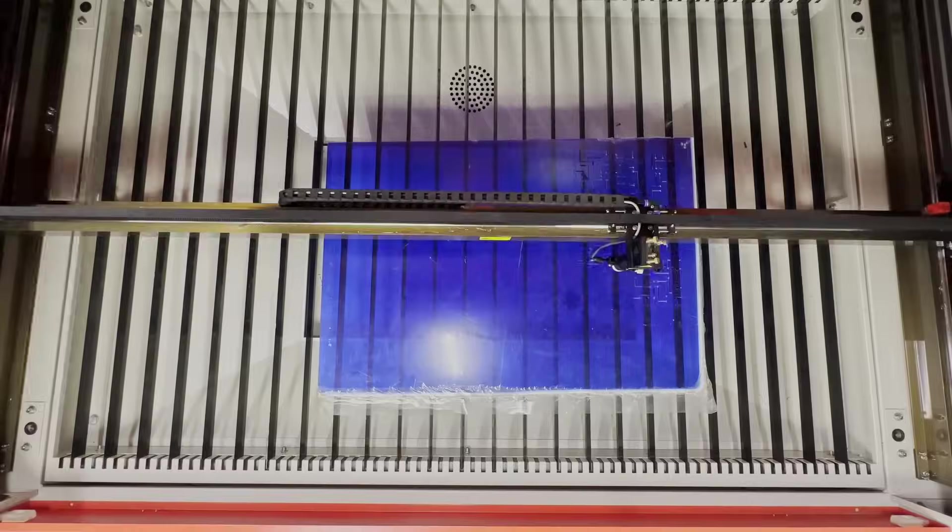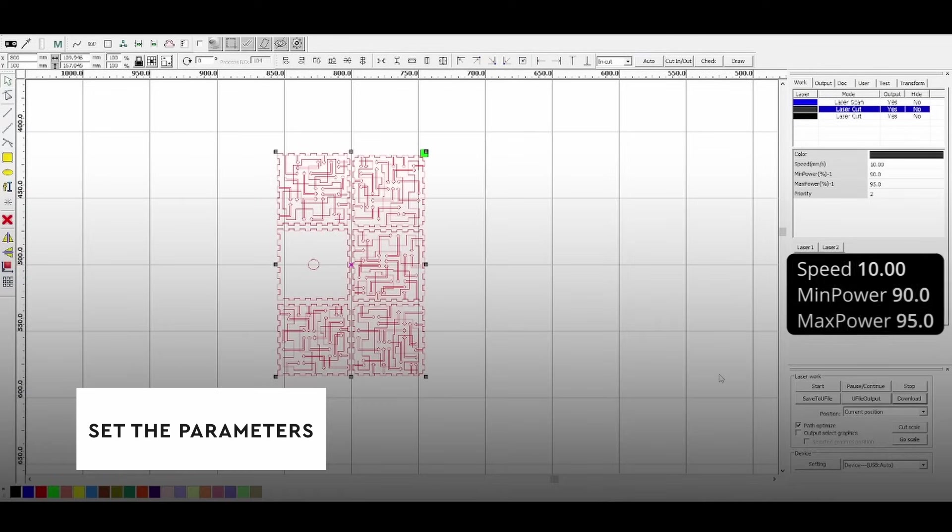So, we have the layout for our 6 parts. Now, we need to set the cutting parameters.